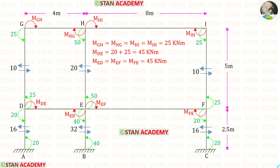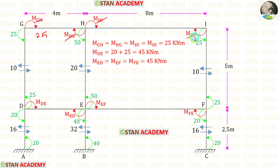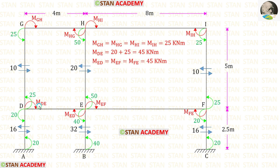Now let us find the moments in the beams. At each joint the summation of moments equals zero. Taking joint G: the column moment is 25 kNm, so M_GH must also be 25 kNm acting in the opposite direction. Now for M_DE: we add the two column moments giving 45 kNm. So M_DE = 45 kNm, and all beam moments at that story level equal 45 kNm.